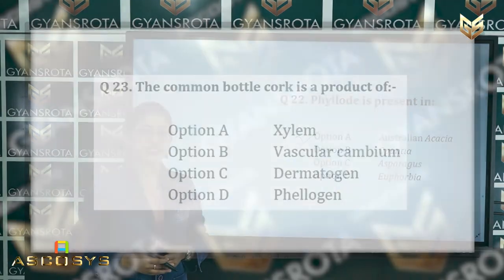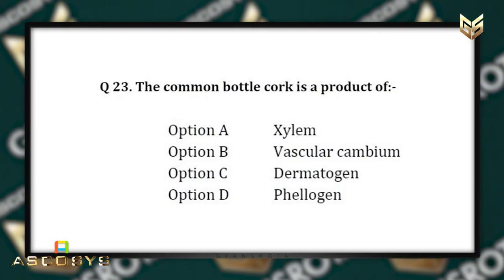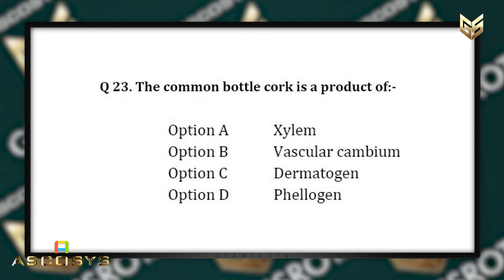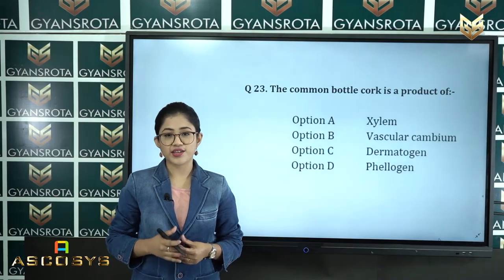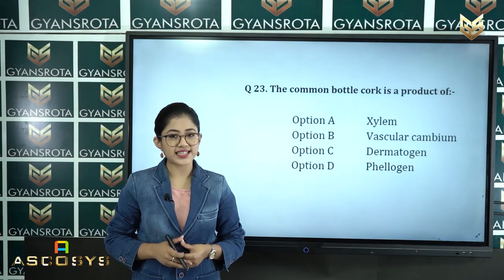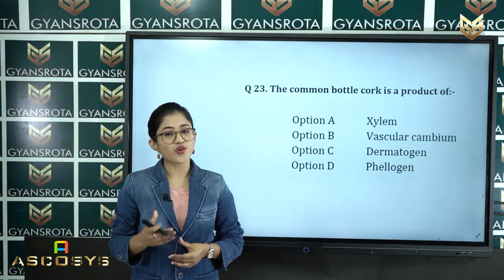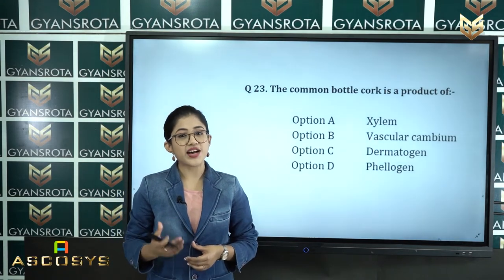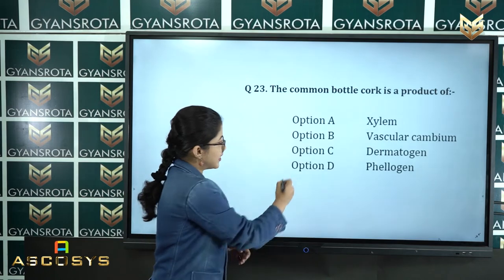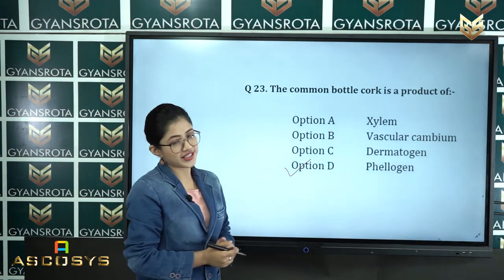Question number 23: The common bottle cork is the product of — option A xylem, option B vascular cambium, option C dermatogen, option D phellogen. The correct answer is cork cambium, which is also called phellogen. Option D is the correct answer.